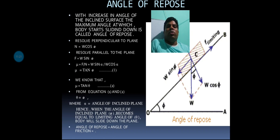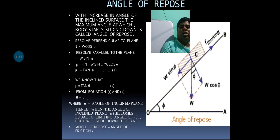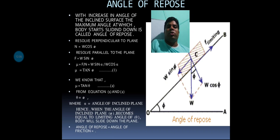Since mu equals F divided by N, substituting gives mu equals W sin phi divided by W cos phi, so mu equals tan phi. We also know mu equals tan theta from the angle of friction. From these two equations, theta equals phi — meaning the angle of repose equals the angle of friction.